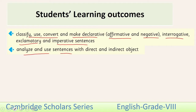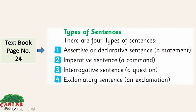We will also analyze and use sentences with direct and indirect objects. In our previous lesson we discussed the kinds of sentences — the simple and the compound, and the phrase and the clause. Now we will discuss the types of sentences. Look at page number 24 of your textbook. There are four types of sentences: assertive or declarative sentence, a statement.